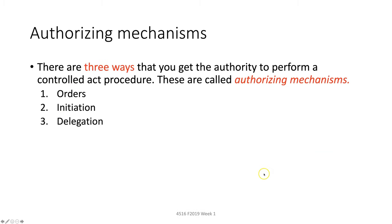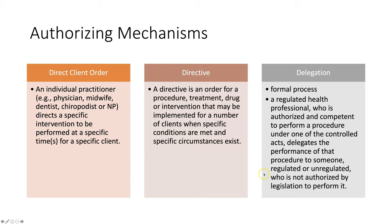There are three ways to get the authority to perform a controlled act procedure, called authorizing mechanisms: through an order, through initiation, or through delegation. You will learn more about these in 4516 in Advanced Professional Issues. I'll give a high-level overview of these authorizing mechanisms.